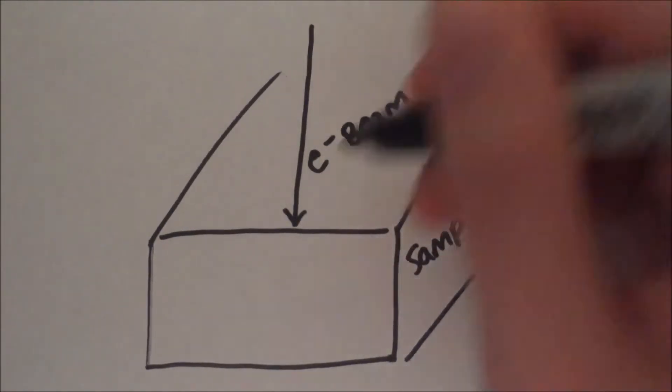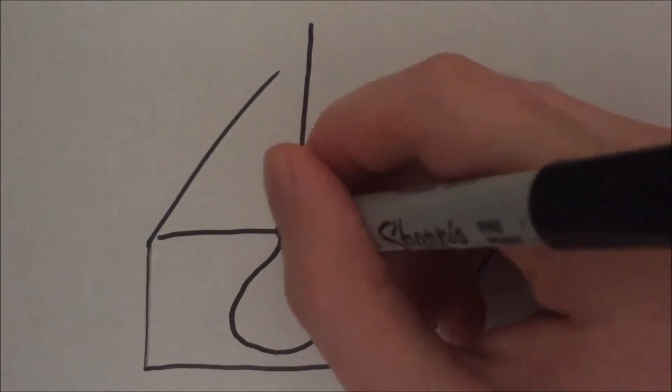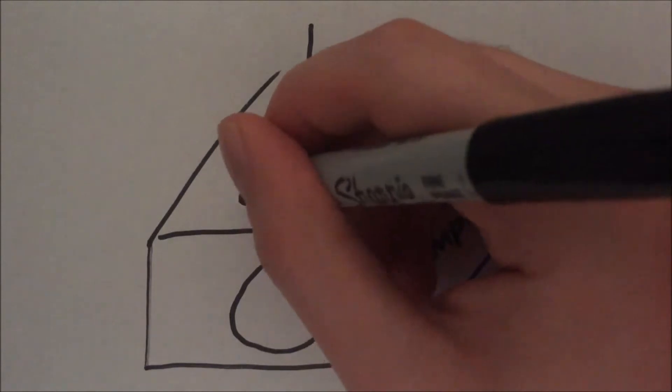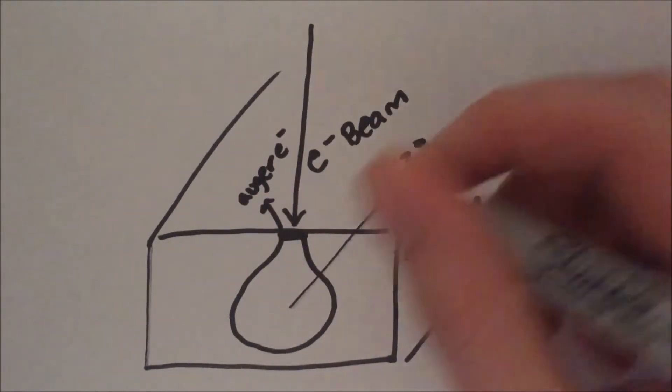This sample volume is teardrop-shaped and is the place where backscattered and secondary electrons are generated, as well as visible and X-ray photons. This interaction volume can be as deep as 5 micrometers depending on the beam energy.